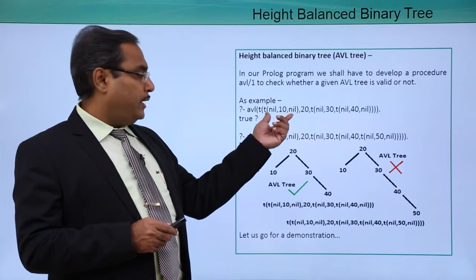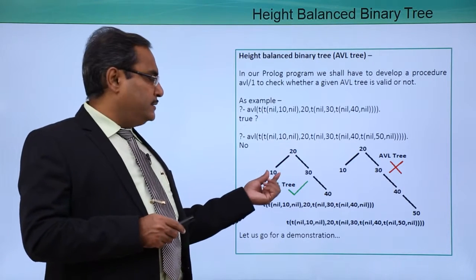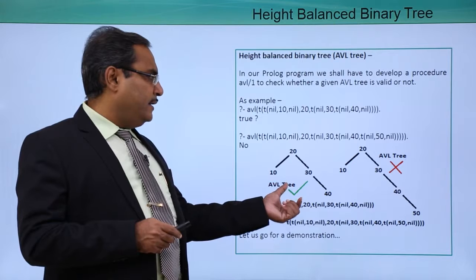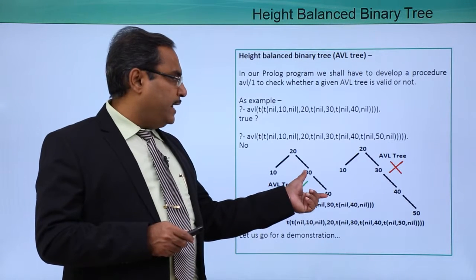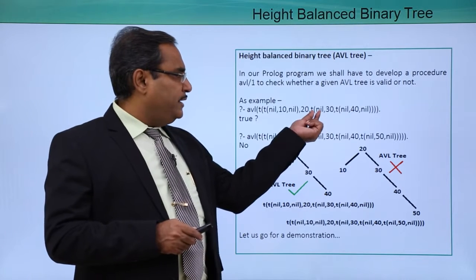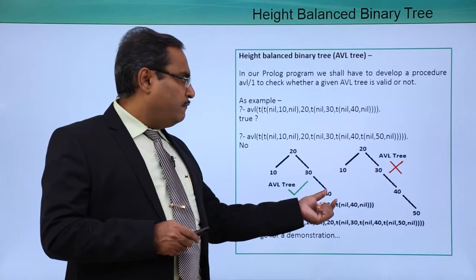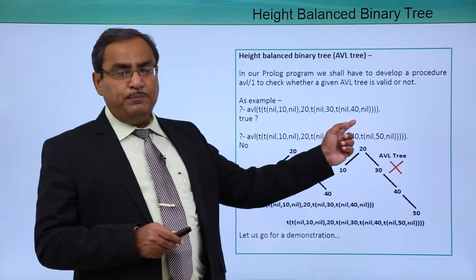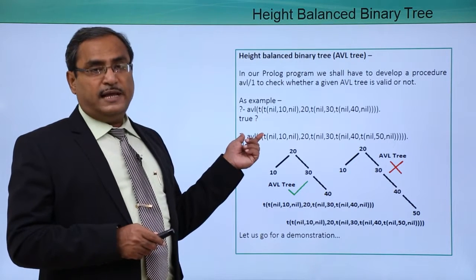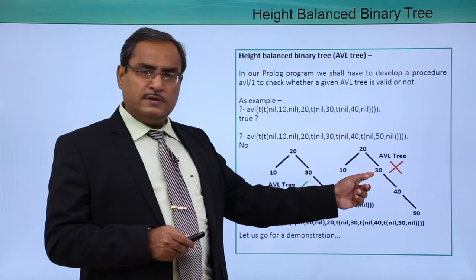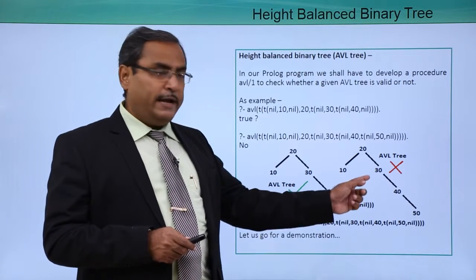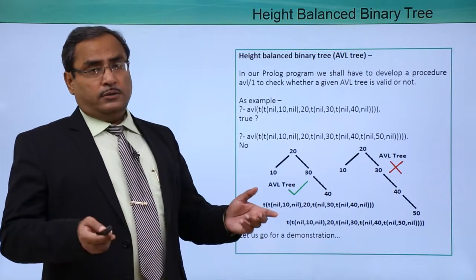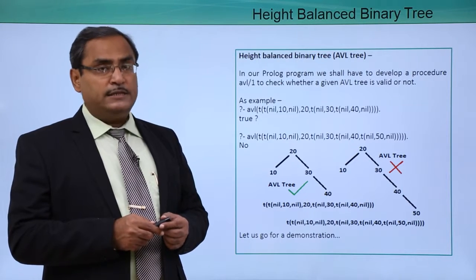This tree has been represented with a root node and a left child. The left child is written as nil 10 nil, and the right subtree has nil as its left subtree and nil 40 nil as the right subtree. This tree structure is passed to the avl predicate and it gives us true. But in the second tree, a particular node has left subtree height equal to 0 and right subtree height equal to 2, giving 0 minus 2 equals minus 2, which proves it is not a height balanced binary search tree.